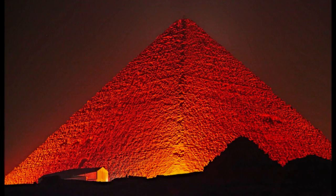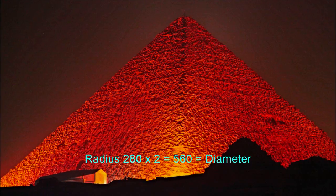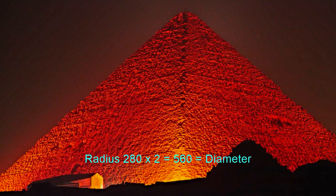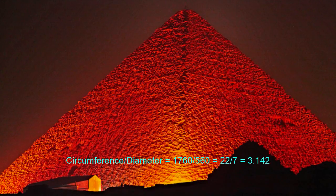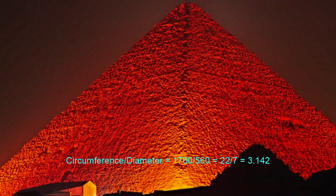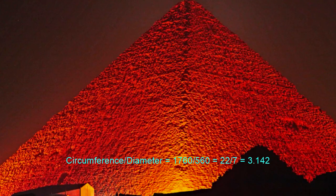then we can double the radius to give us a diameter of 560. And if we divide 1760 by 560, it's the same as 22 over 7, which is 3.142, which is a close approximation of Pi.